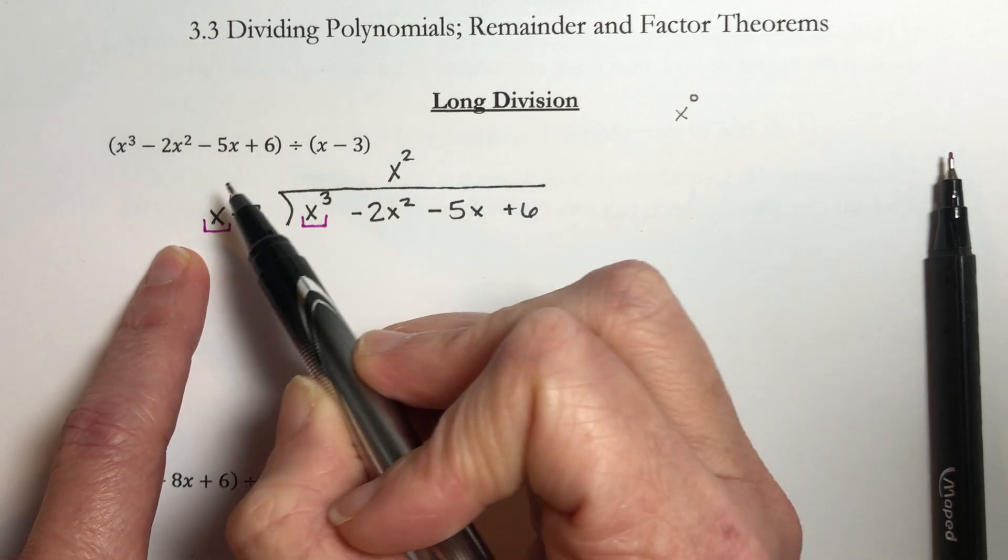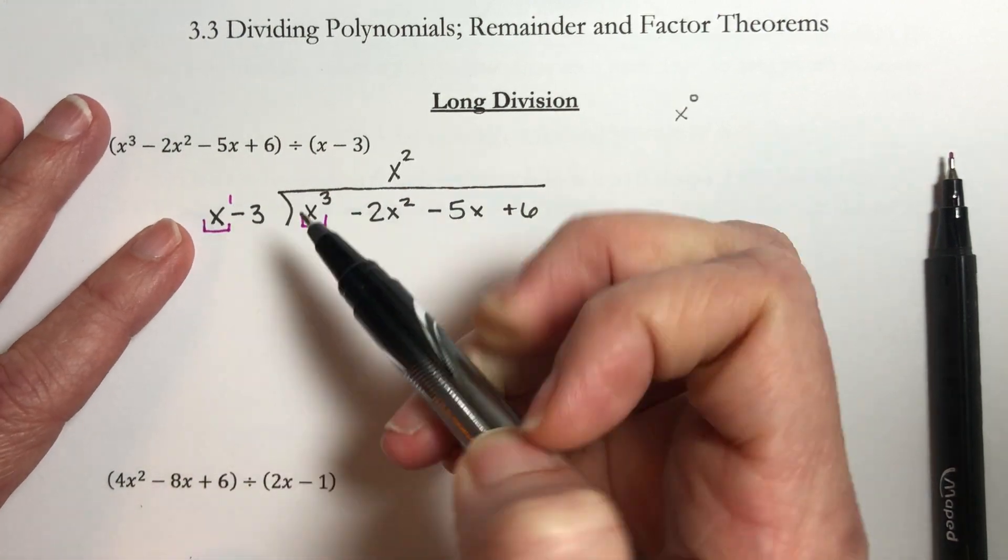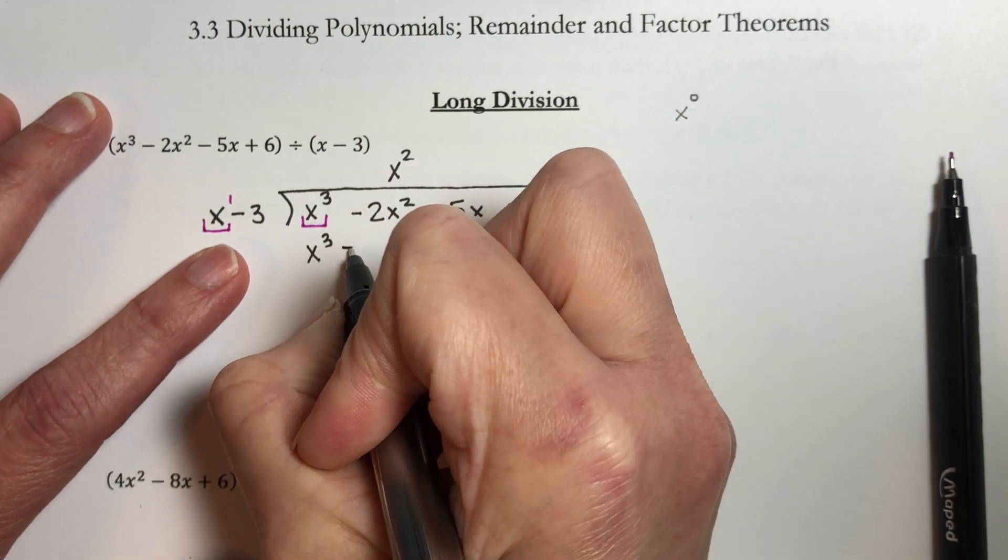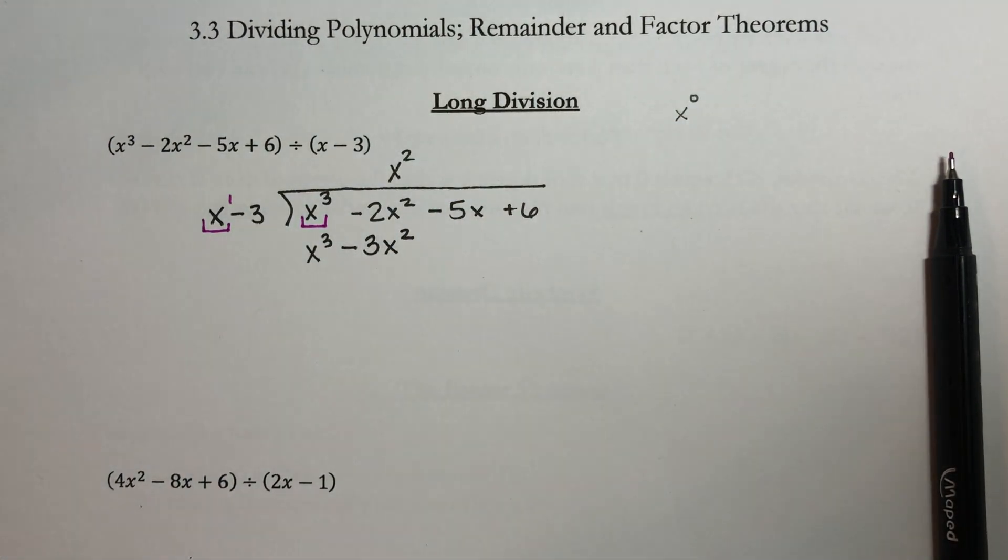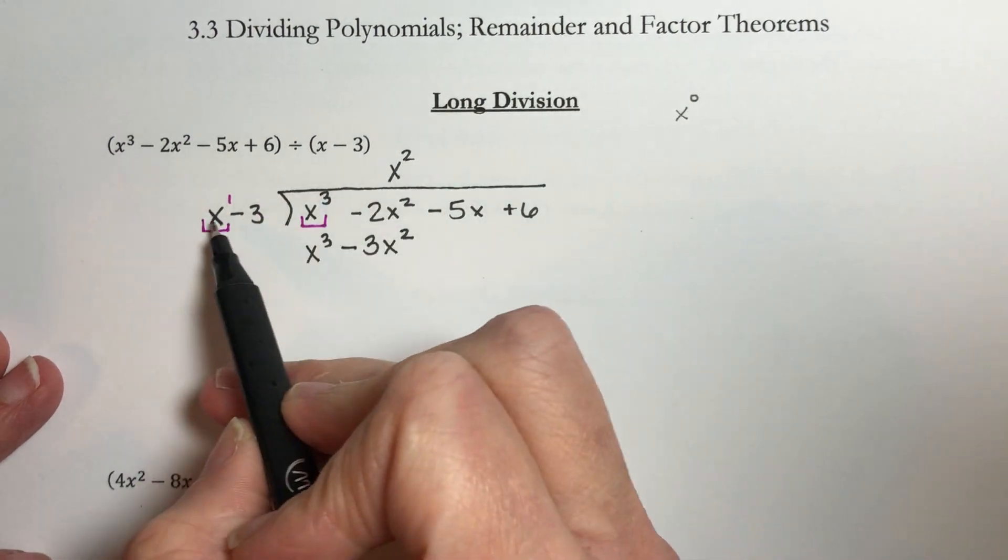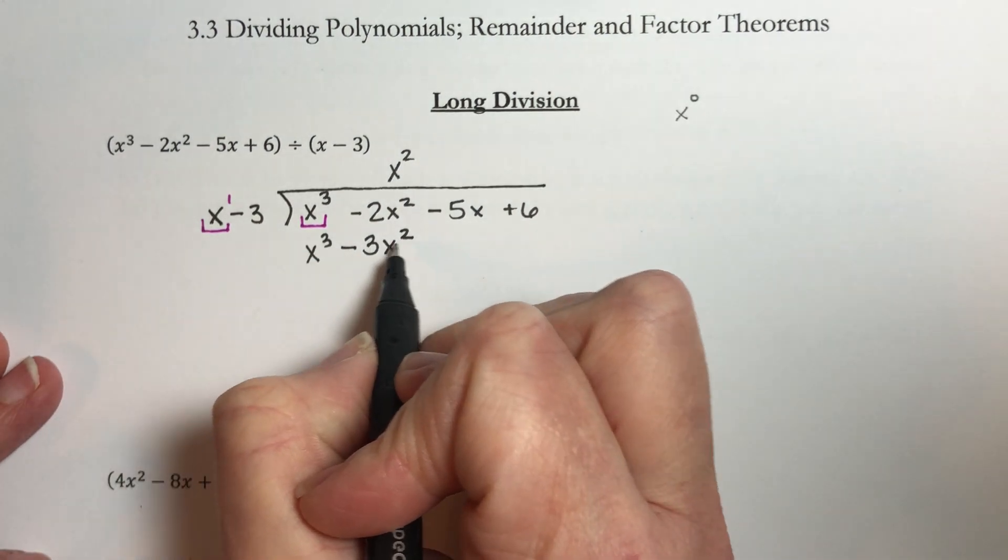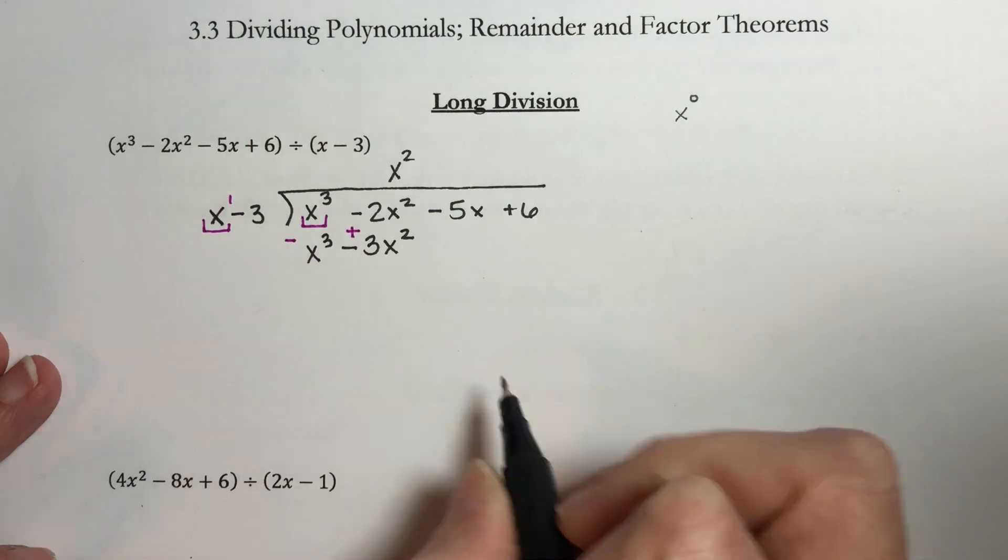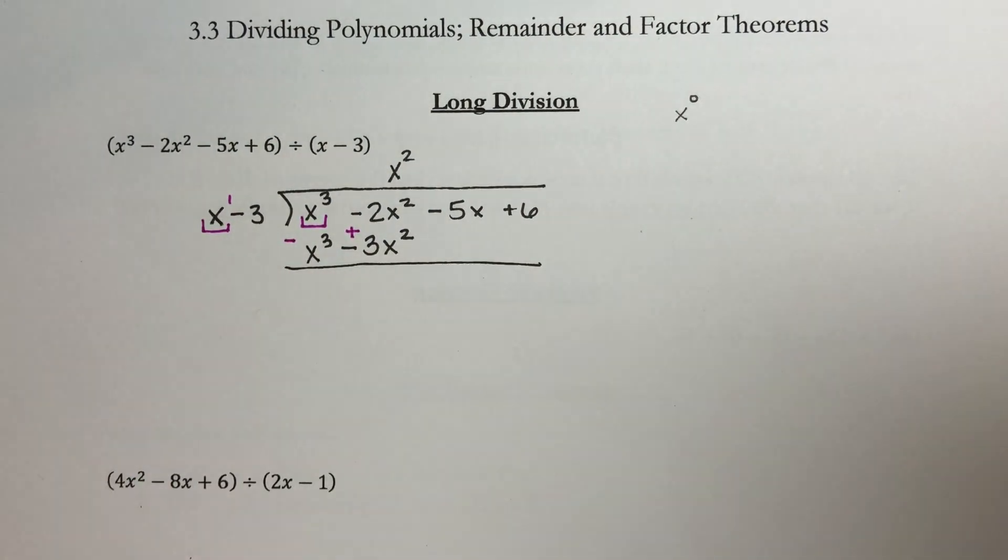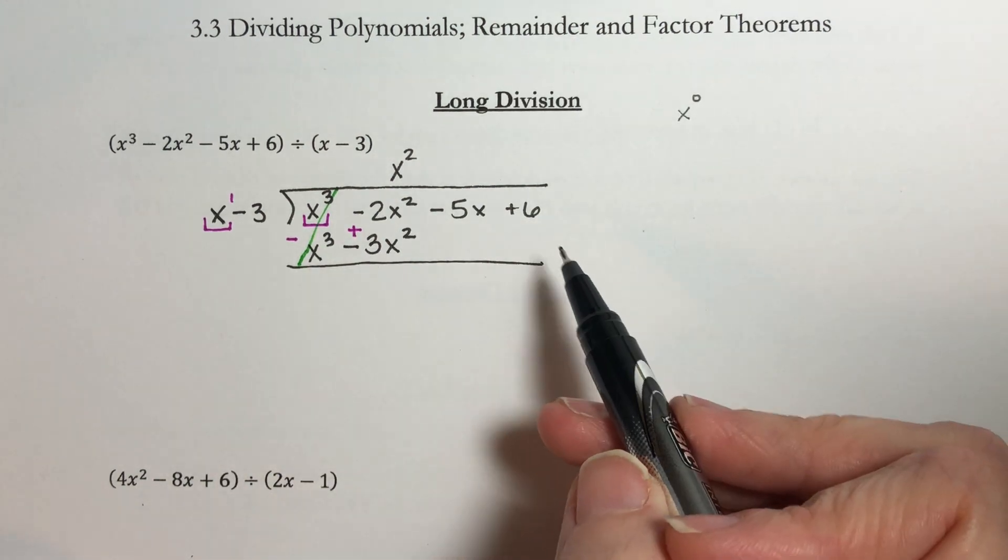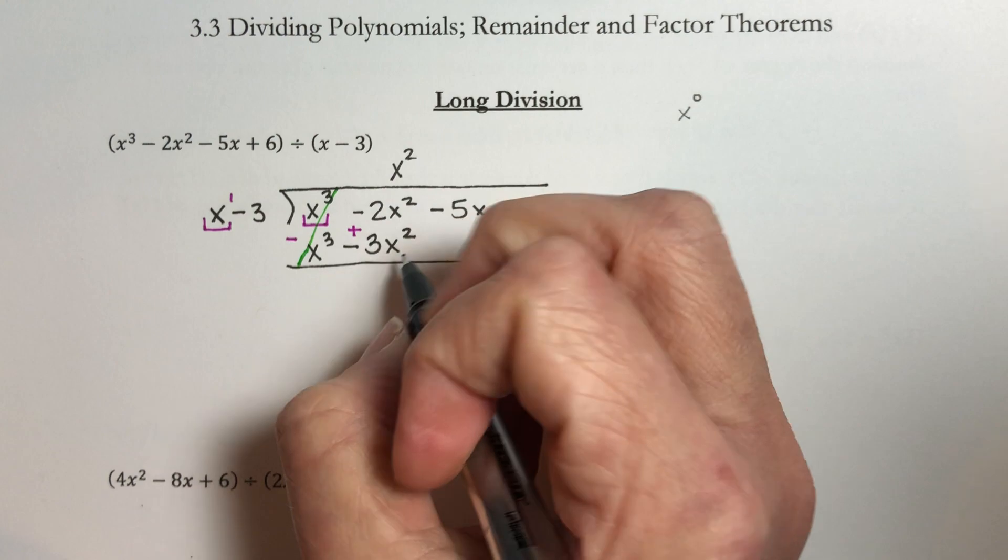Now what we want to do is we want to take this value and distribute it through here. So x squared times x is x cubed. x squared times a negative 3 is negative 3x squared. Now if we've done this correctly these two terms should be exactly the same. Now what we do here is we take this and we multiply it through here and then we subtract. I need to subtract all of this and if you're subtracting a whole polynomial what you're doing is you change the sign on each individual term and then you add them. Now what should happen here is our first term should cancel out because we tried to match it and then when we subtract it away it should go away. Now we combine like terms everywhere we have something. Negative 2x squared plus 3x squared is x squared.